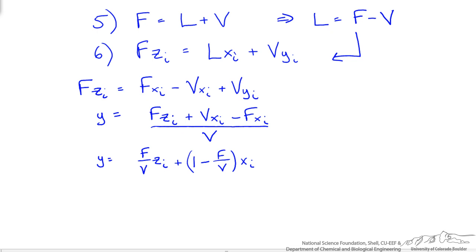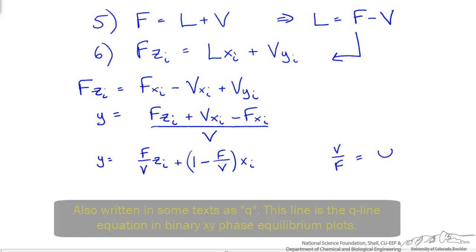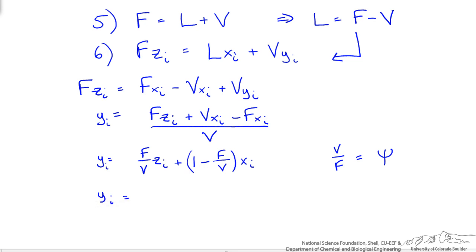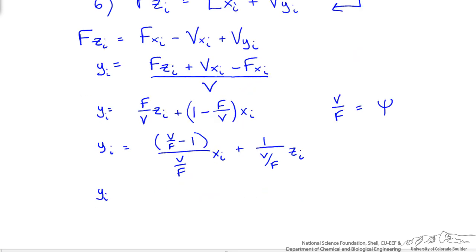But a more convenient form is where we have the fraction V over F which is the percent or fraction of our feed stream that is vaporized. And we typically have seen this also written as psi. So the final form of the equation for our operating line is going to be the following. The only thing differently I am going to do is plug in our psi variable.